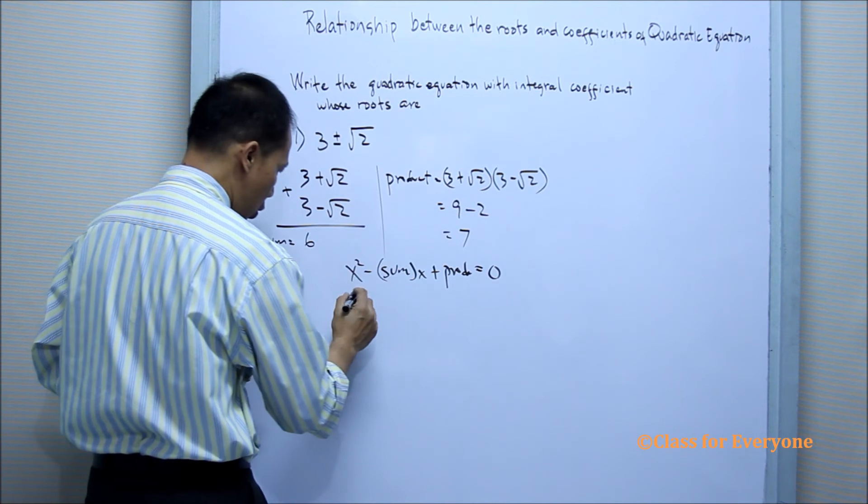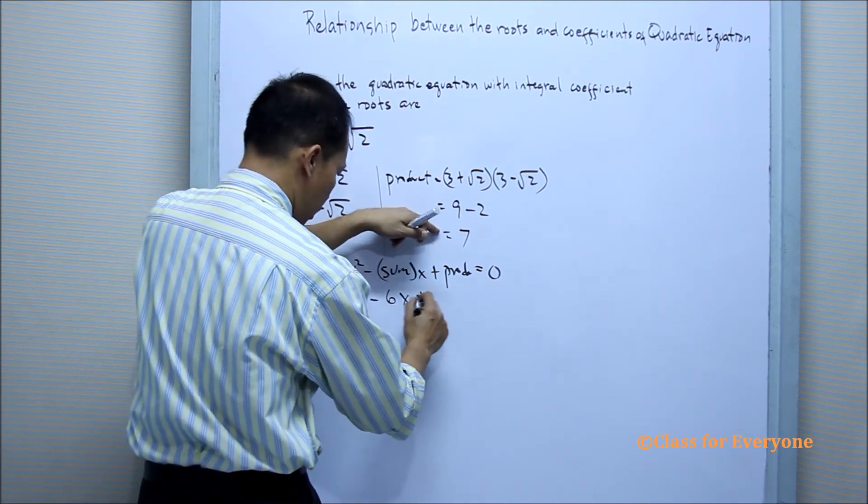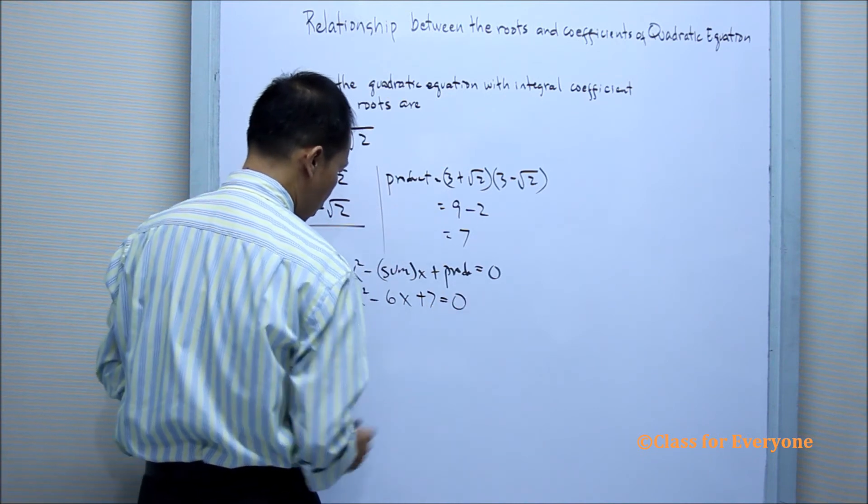By substitution, we have x squared minus 6x plus 7 is equal to 0.